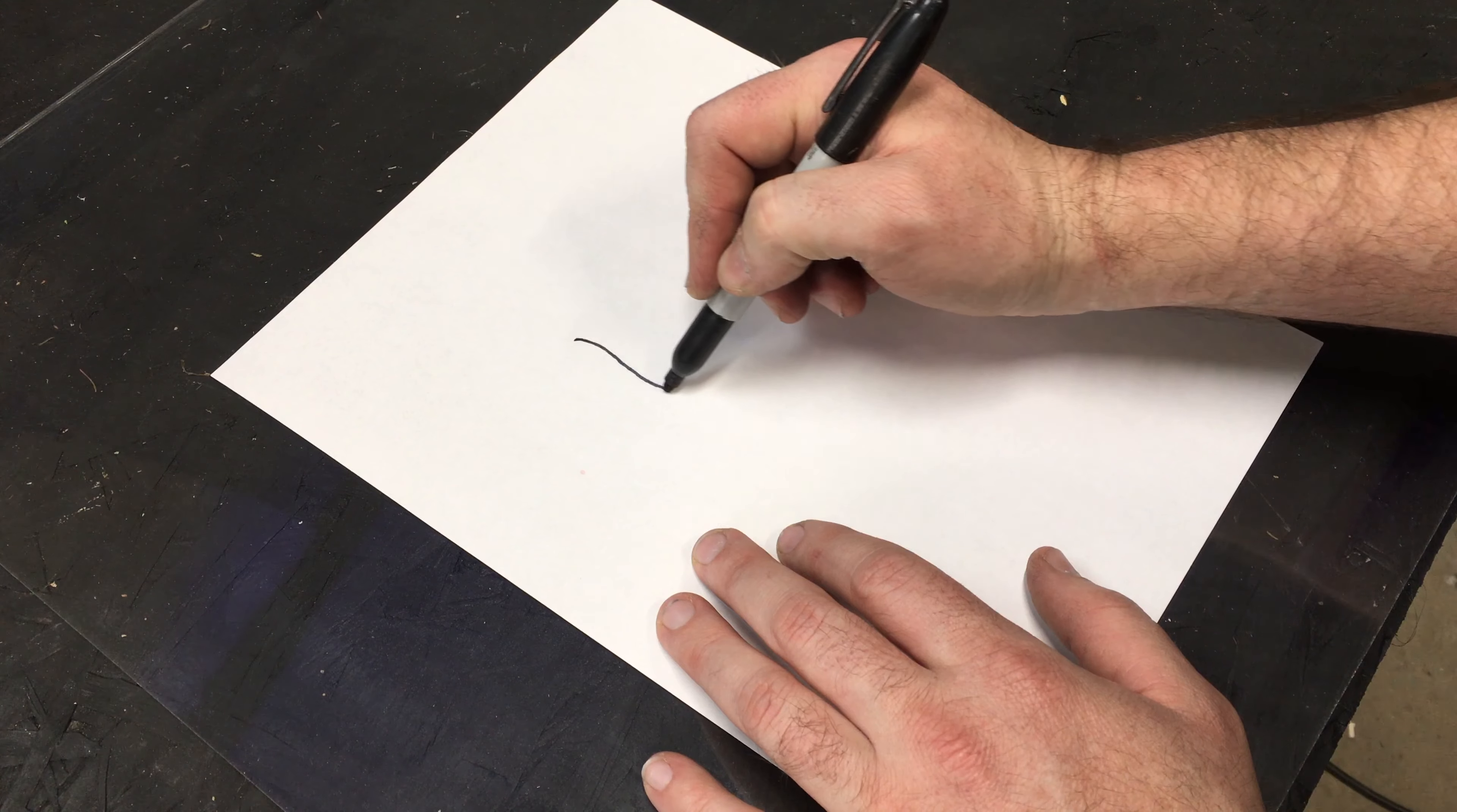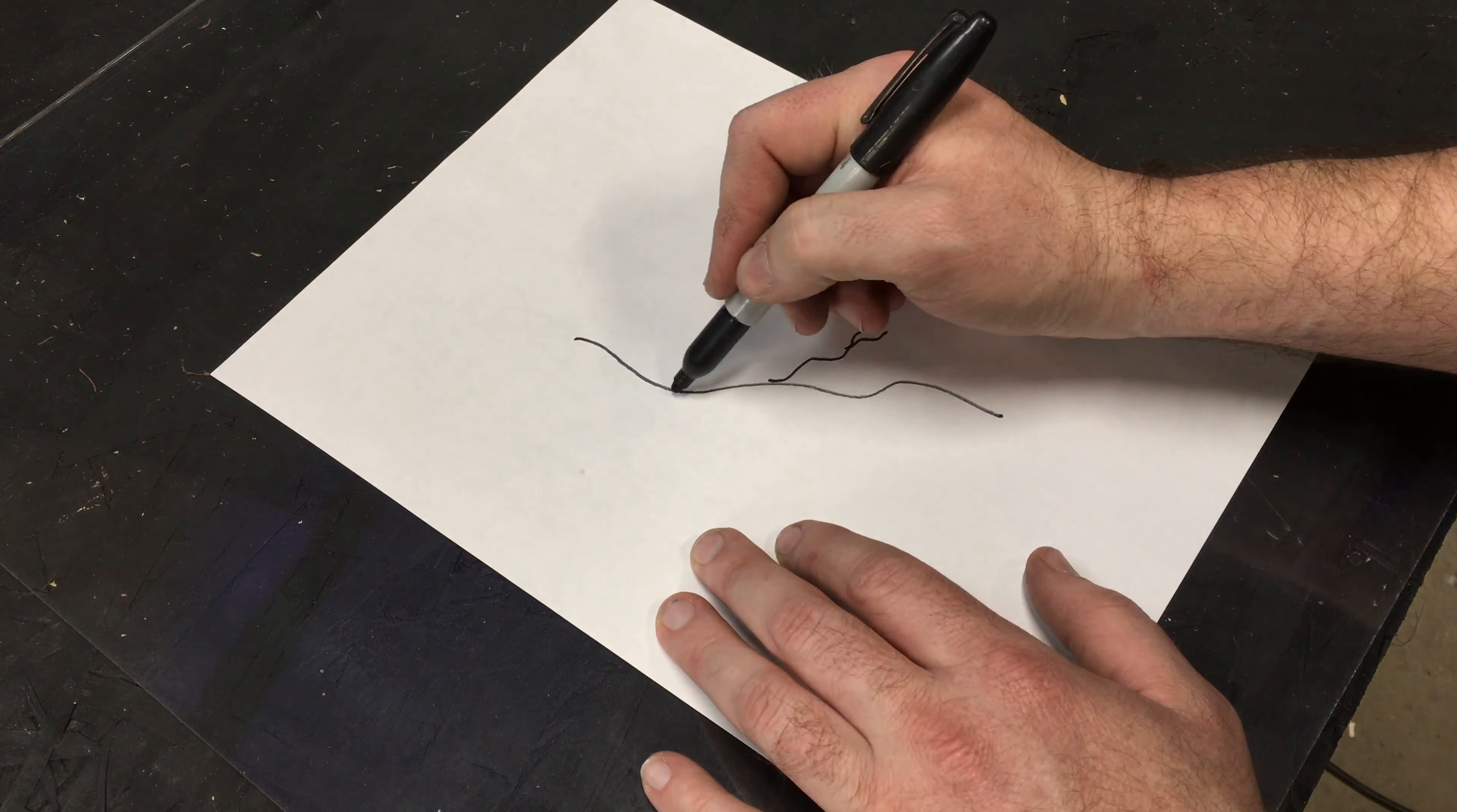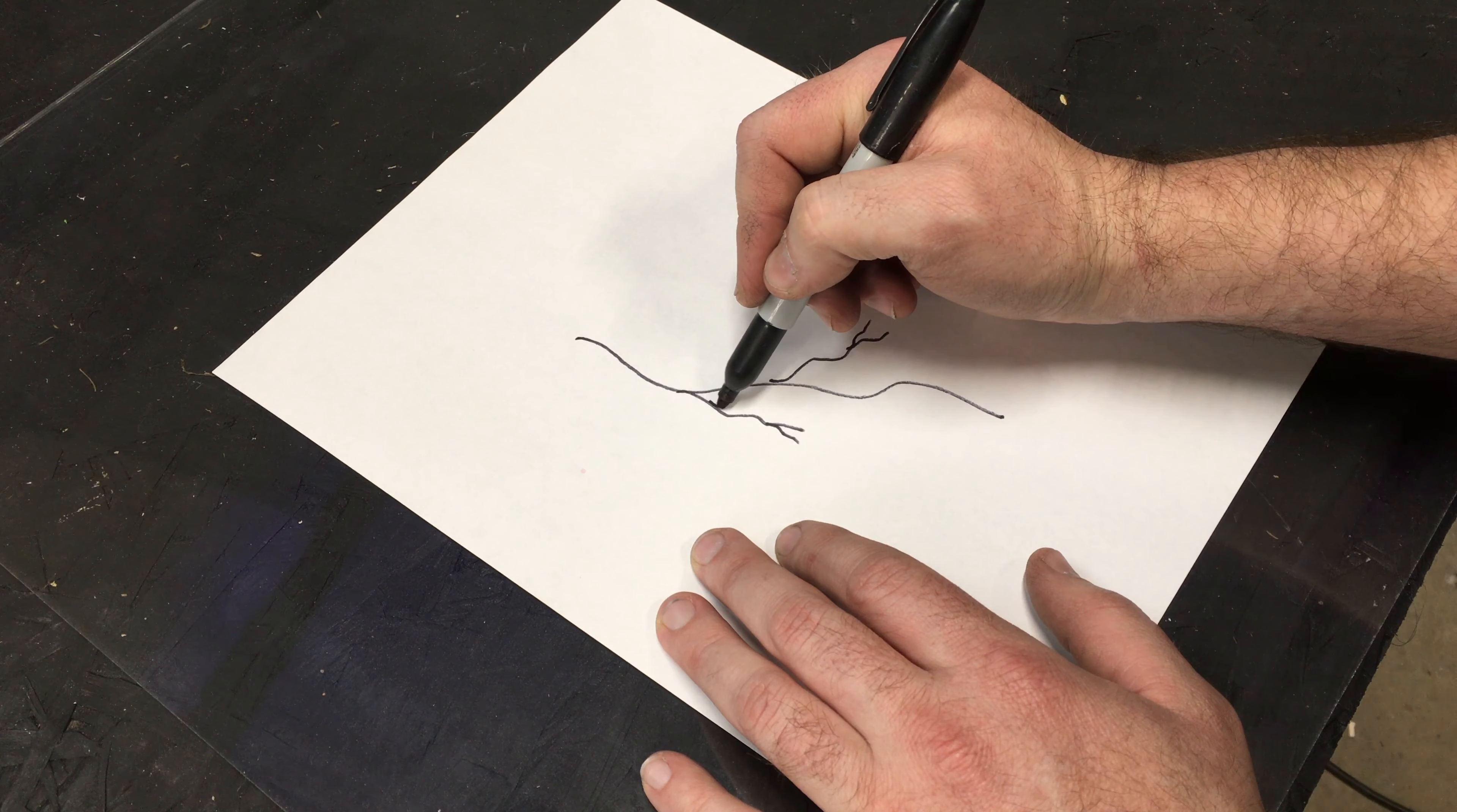Here I'm just drawing out my stencil. I'm just going to freehand draw some lightning bolts. I've done this several times so I'm very familiar with it. But if you have trouble you can always just print off a picture of a lightning strike and trace right on over it.